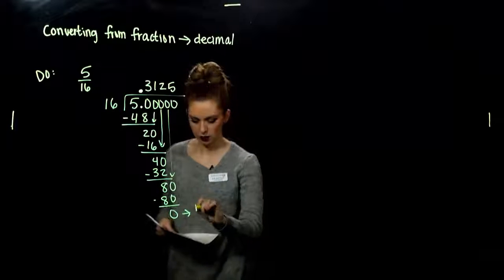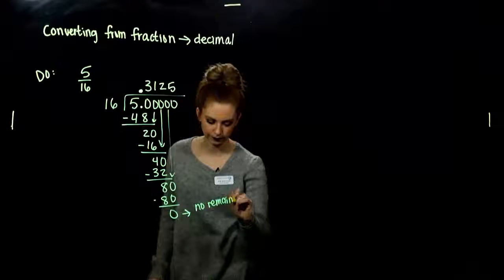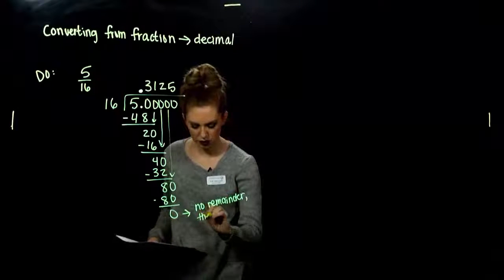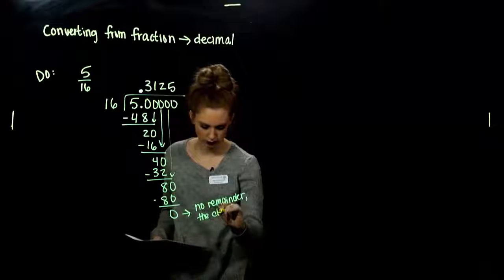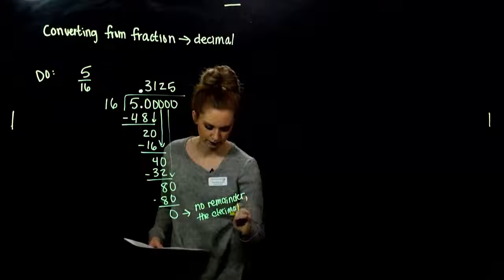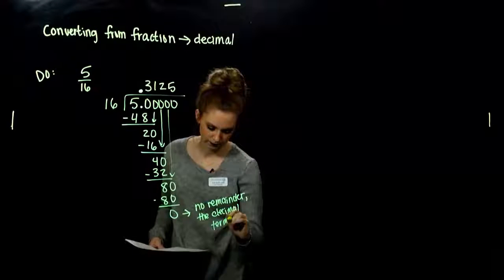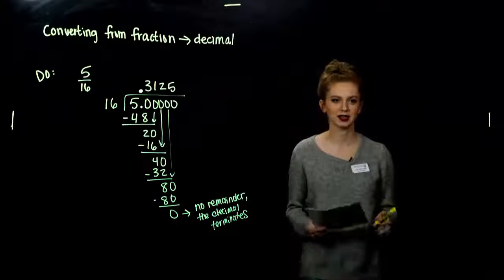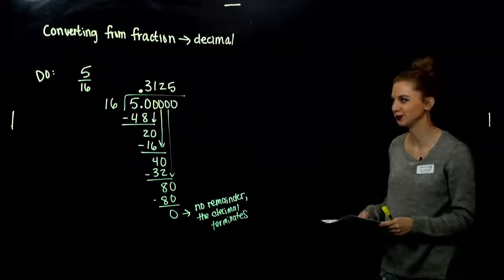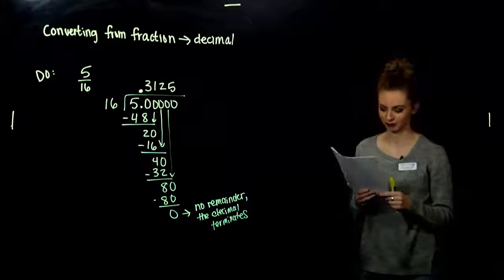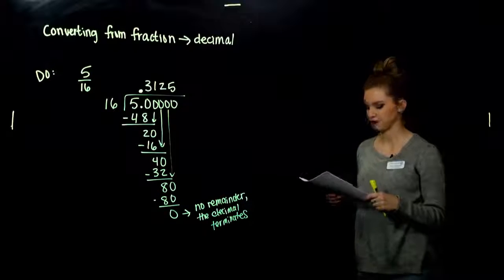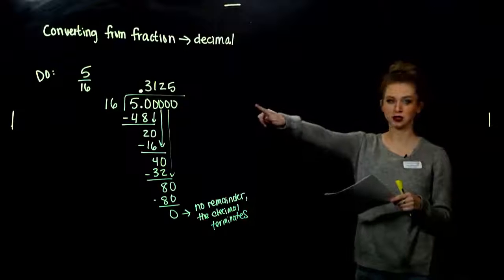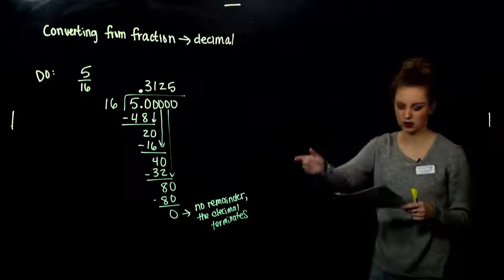So that decimal is terminating — it stops right there. No remainder means the decimal terminates. In that case the decimal is terminating; we hit a remainder of 0 and stopped. So let's look at a case where it's not terminating, where it keeps going.